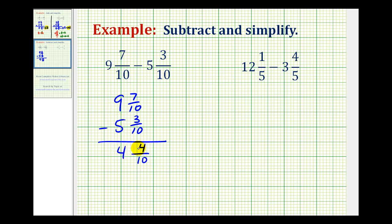However, we do have to simplify our fraction of 4 tenths. 4 and 10 do share a common factor of 2. So 4 tenths simplifies to 2 fifths. So our final difference is 4 and 2 fifths.